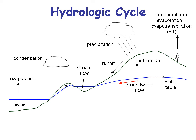Groundwater flow runs downhill just like water on the surface — it does underground as well. The base flow is where the water flows into a body of water from underground. That's a term you'll need to know. Multiple base flows exist depending on the body of water the groundwater is running into. You also get subsurface outflow.